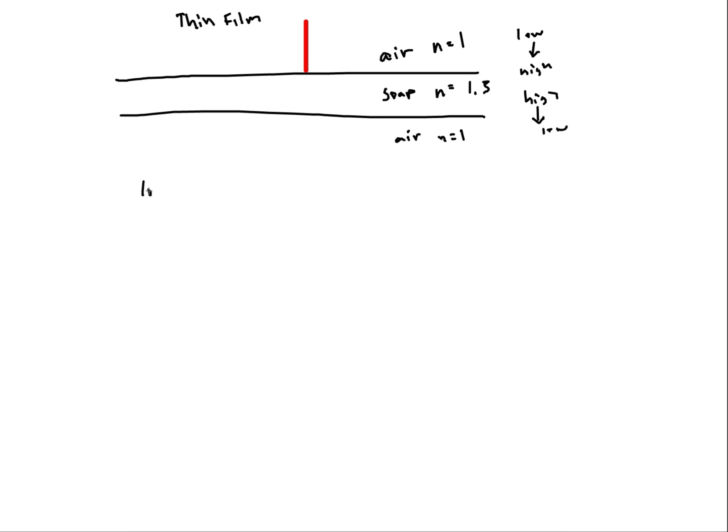Now when you have a phase shift, low to high is the only time that you have a 180 degree or a half cycle, half wavelength phase shift. When you're going from high to low there is no phase shift. So we see here that yes, when that light is reflected off it will be shifted. When the light comes in and reflects again, it will not be shifted.